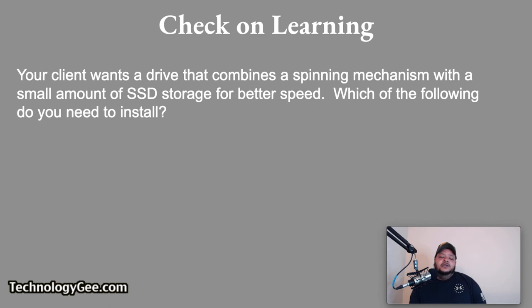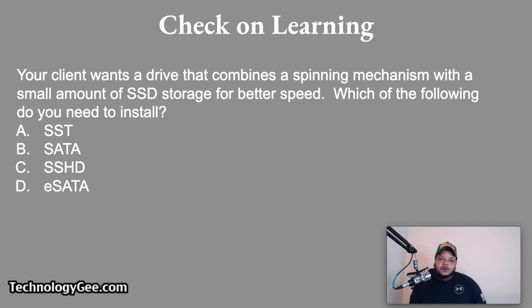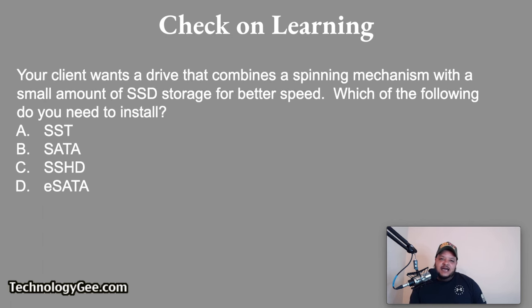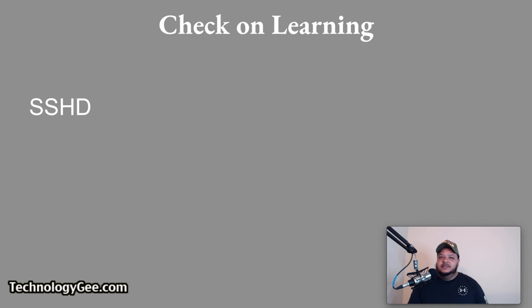Final question: your client wants a drive that combines a spinning mechanism with a small amount of SSD storage for better speed. Which do you install — an SST, a SATA, an SSHD, or an eSATA? The correct answer is SSHD. An SSHD is a combination of a standard hard drive with spinning platters and a solid-state drive component, giving better performance than a spinning disk alone at lower cost than a full SSD.